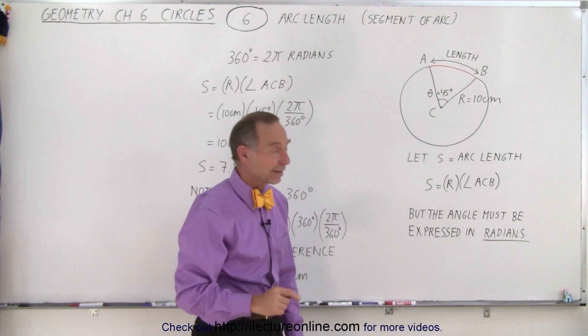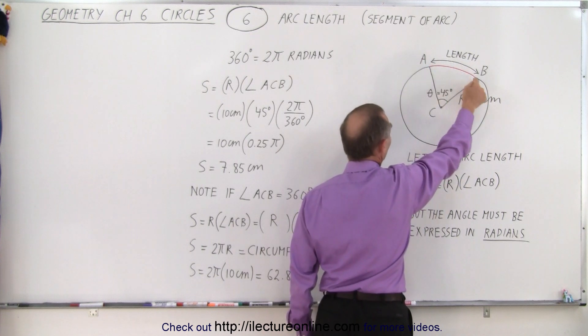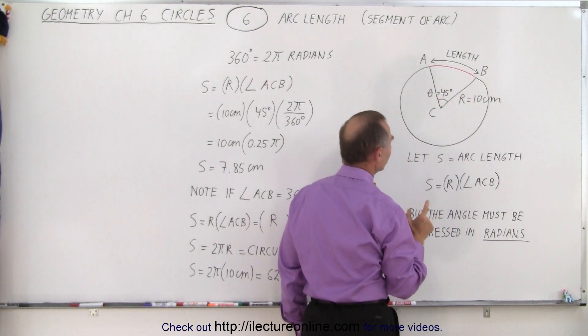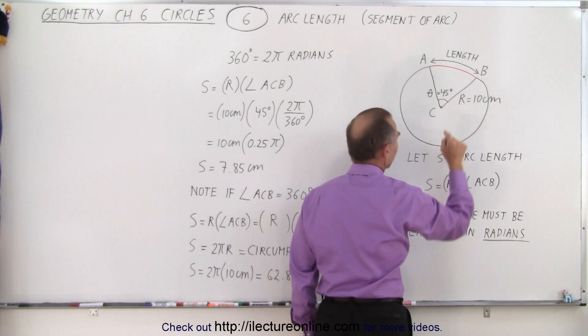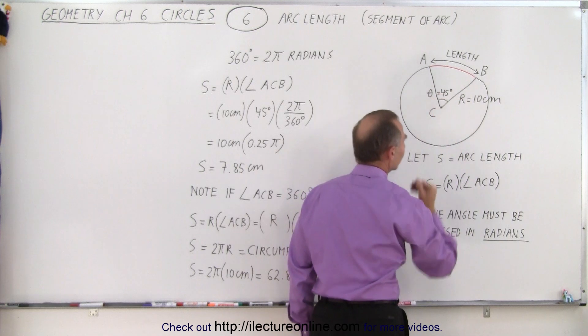And it turns out that the distance along that segment, along the circle, that is cut off by these two endpoints of these two segment lines right here, can be determined by taking the radius of the circle and multiplying it times the angle that these two lines subtend.